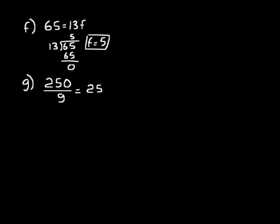Look at this problem: 250 divided by g equals 25, or 250 divided by what equals 25? Maybe you can see in your head that 250 divided by 10 equals 25. Or you can use fact families and rearrange: do 250 divided by 25 to find g. 25 goes into 25 one time, bring down the 0, and 25 goes into 0 zero times. So g equals 10.